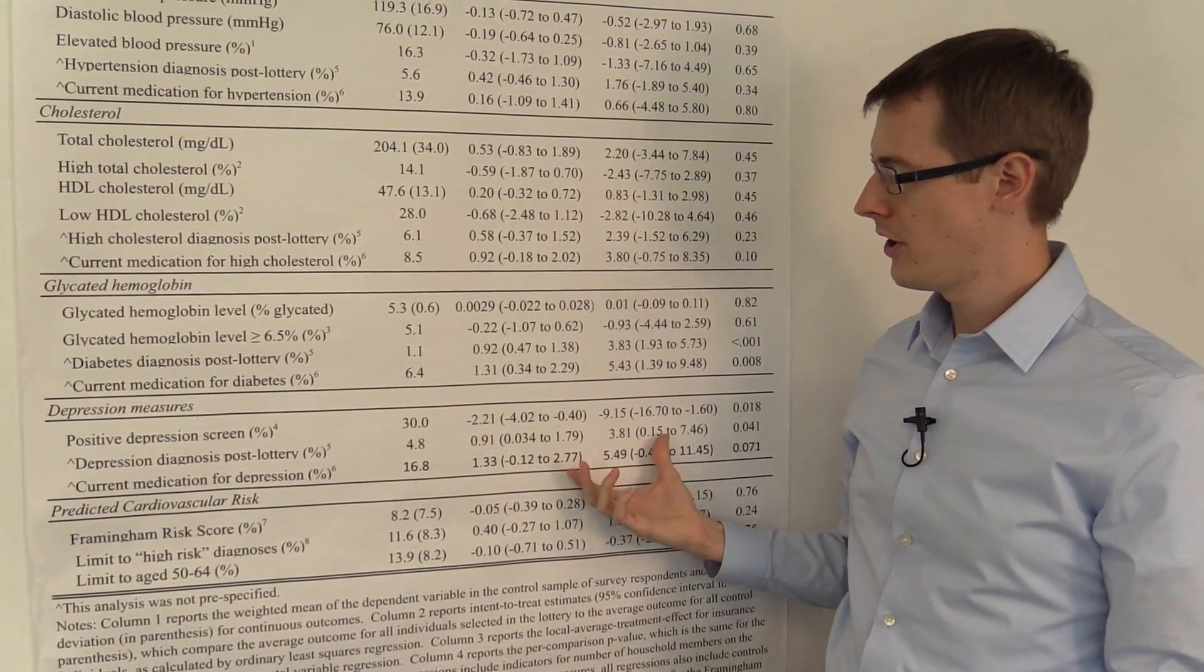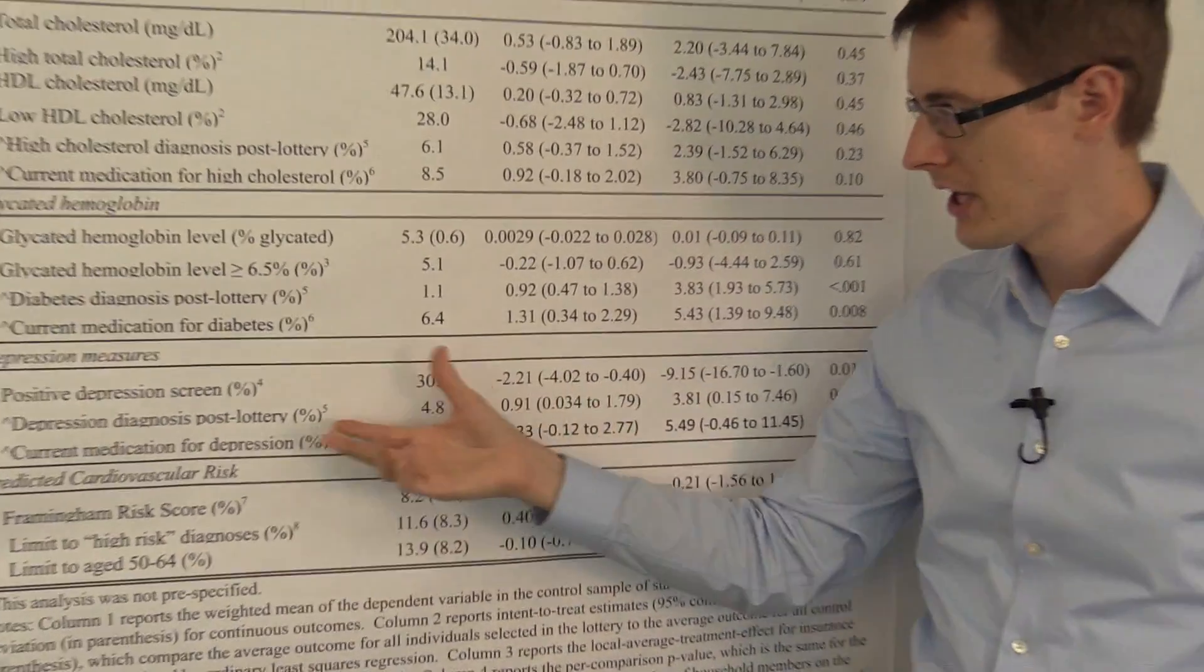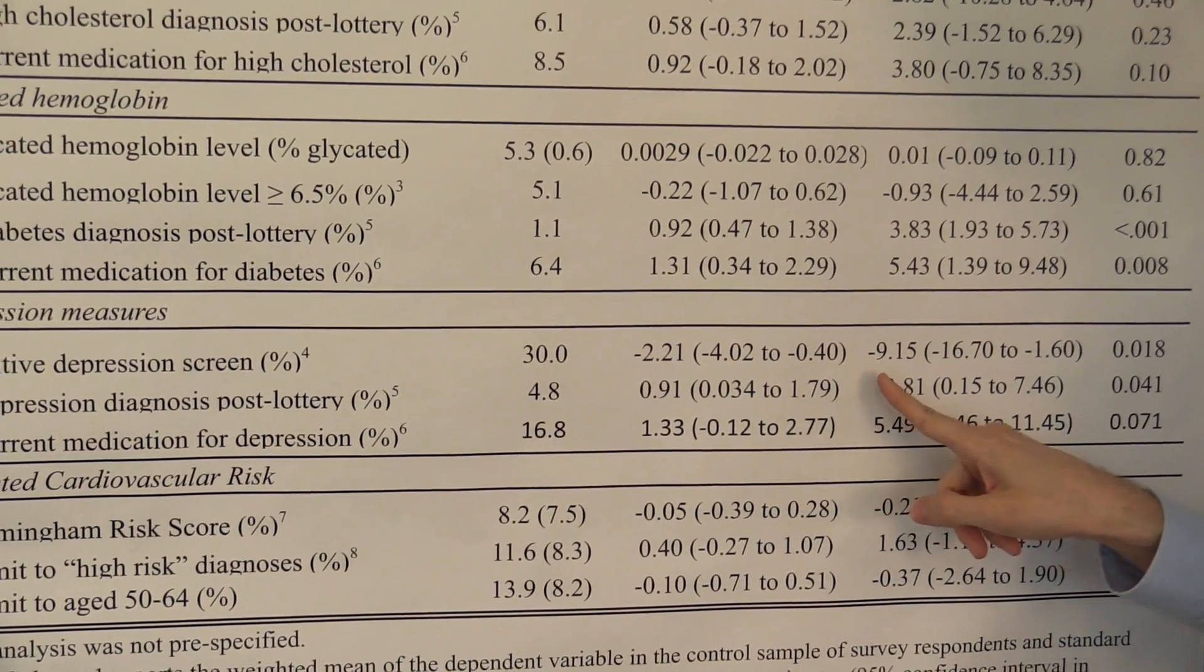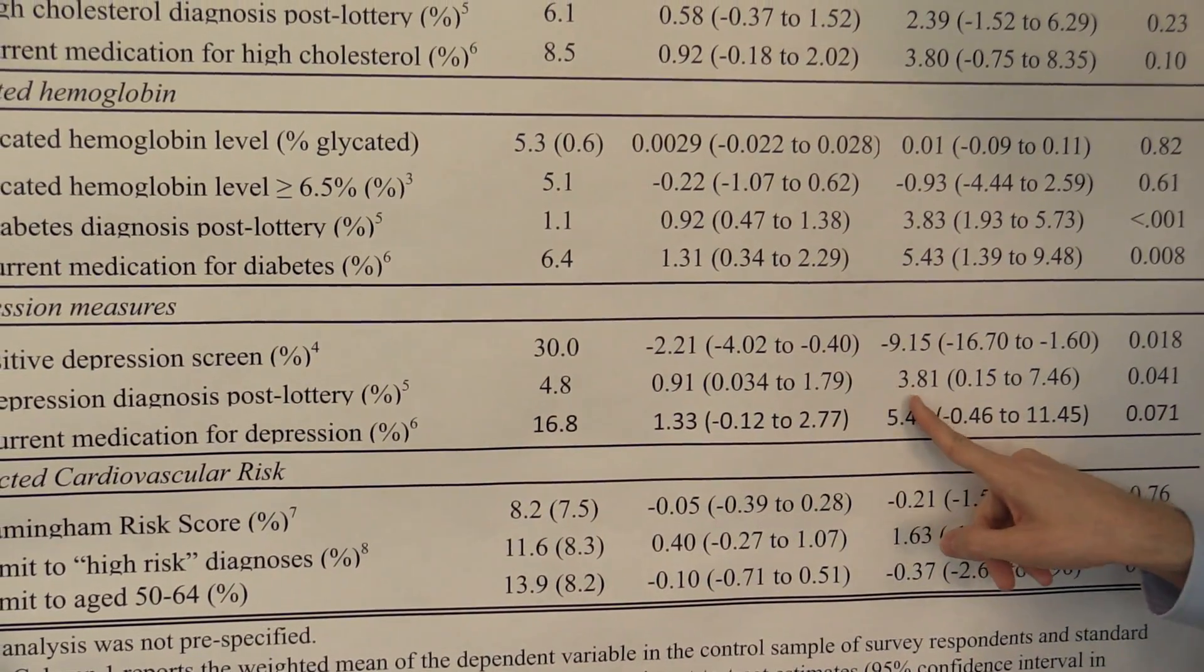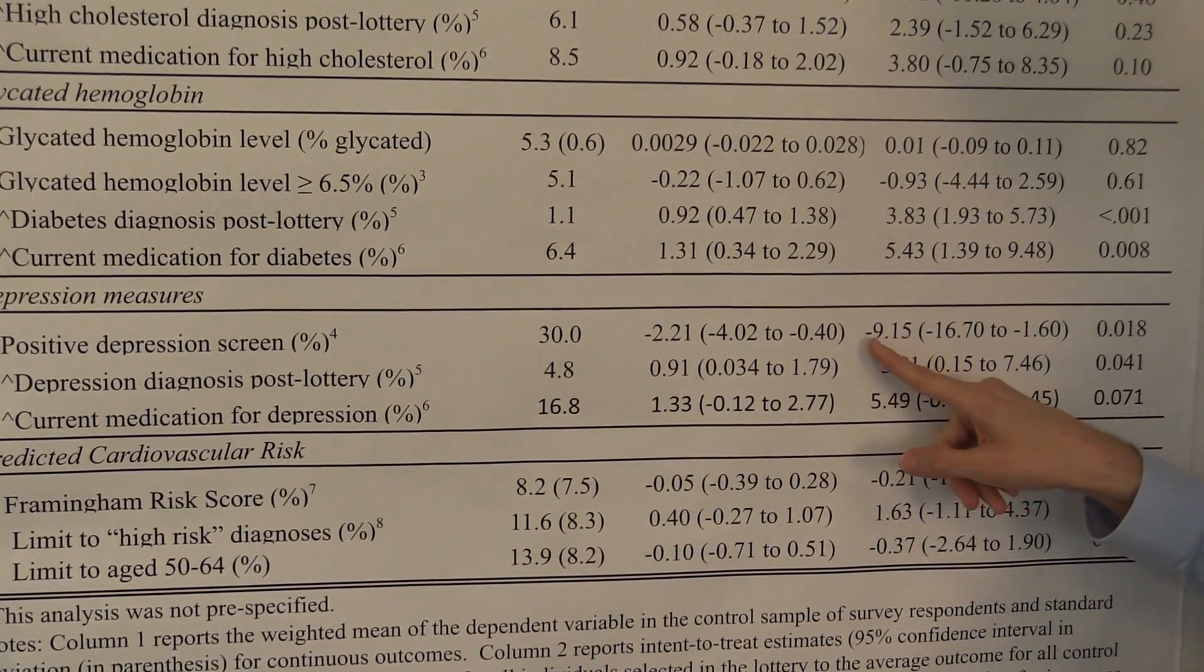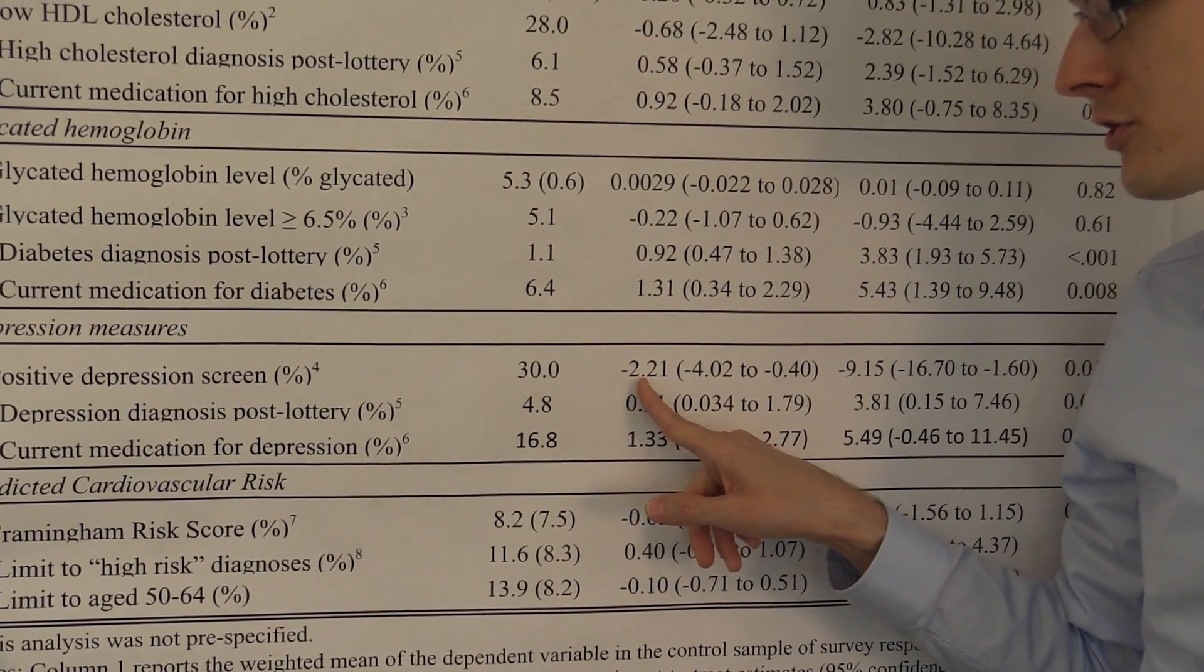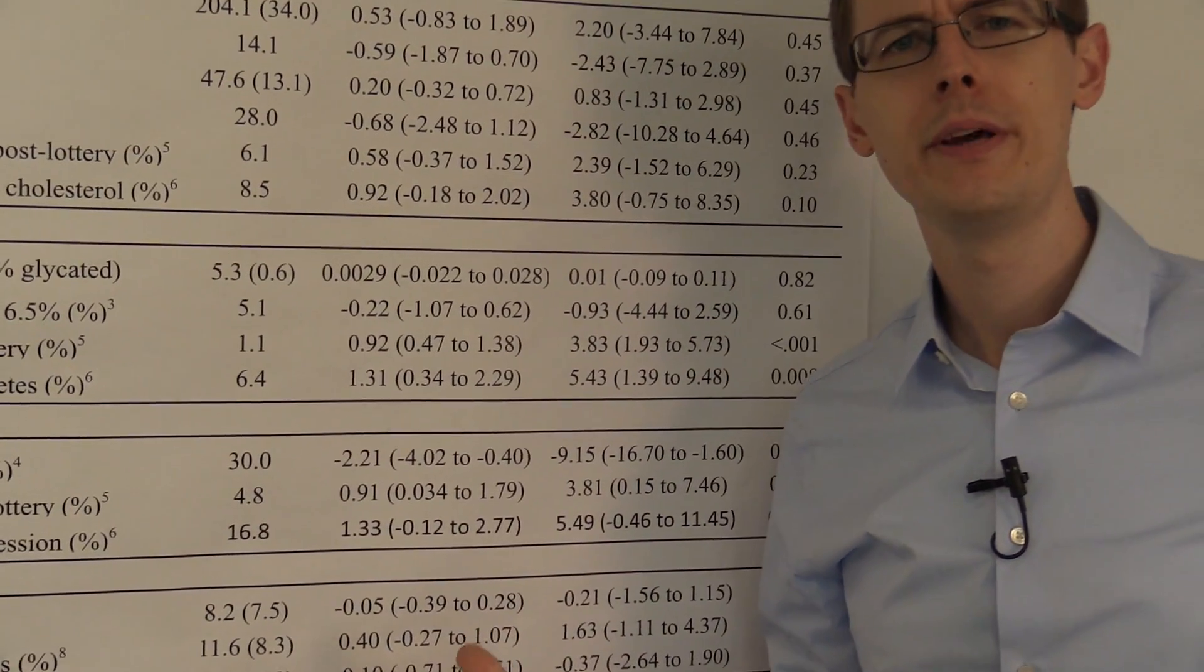The first thing you should notice is let's compare them to the intention-to-treat numbers. Let's just look at the depression measures. If you compare the estimates, we see that all of the two-stage least squares estimates are larger in magnitude than the intention-to-treat estimates. So, minus 9.15, that's a lot larger than minus 2.21. Why might the magnitude be larger?